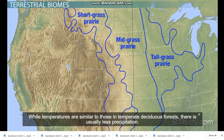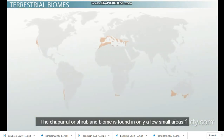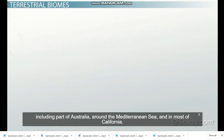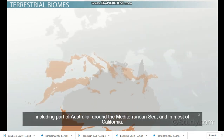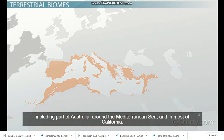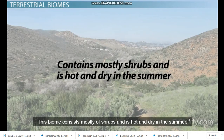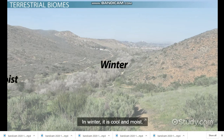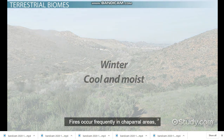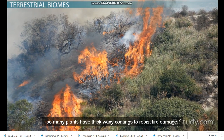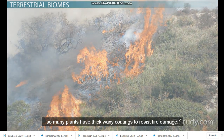The chaparral, or shrubland biome, is found in only a few small areas, including part of Australia, around the Mediterranean Sea, and in most of California. This biome consists mostly of shrubs and is hot and dry in summer. In winter, it is cool and moist. Fires occur frequently in chaparral areas, so many plants have thick, waxy coatings to resist fire damage.